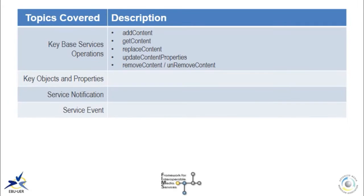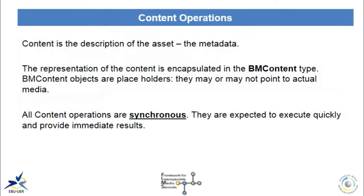Let's now review the content operations: add content, get content, replace content, update content properties, remove and unremove content. Content is a description of the asset — the metadata — and its representation is encapsulated in the BM content type. BM content objects are placeholders; they may or may not point to actual media. All content operations are synchronous — they are expected to execute quickly and provide immediate results, success or failure. We will review in more detail the add content and get content operations, as these two functions are expected to be heavily used by any client.